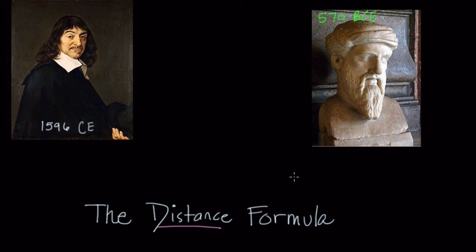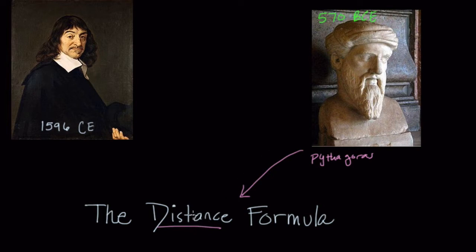First of all, it's really a result of the Pythagorean theorem. Here we have Pythagoras, who is often attributed with the Pythagorean theorem, although we could certainly spend an entire video discussing that. The distance formula is the result of the work around the right triangle in which we say that a squared plus b squared equals c squared.